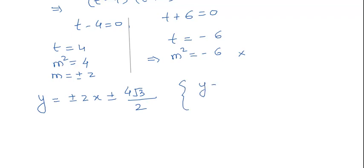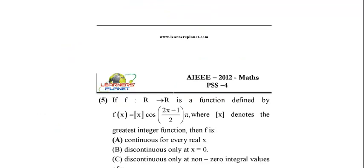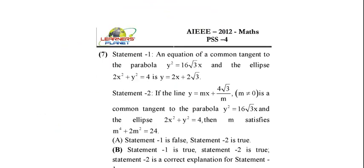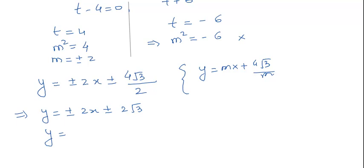Substituting m = ±2 into y = mx + 4√3/m gives y = ±2x ± 2√3. Taking the positive signs, we get y = 2x + 2√3 as one of the common tangents.